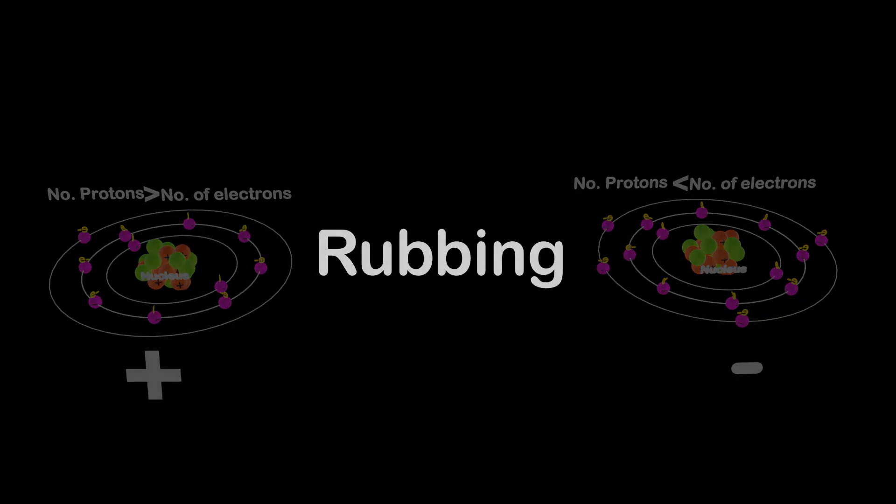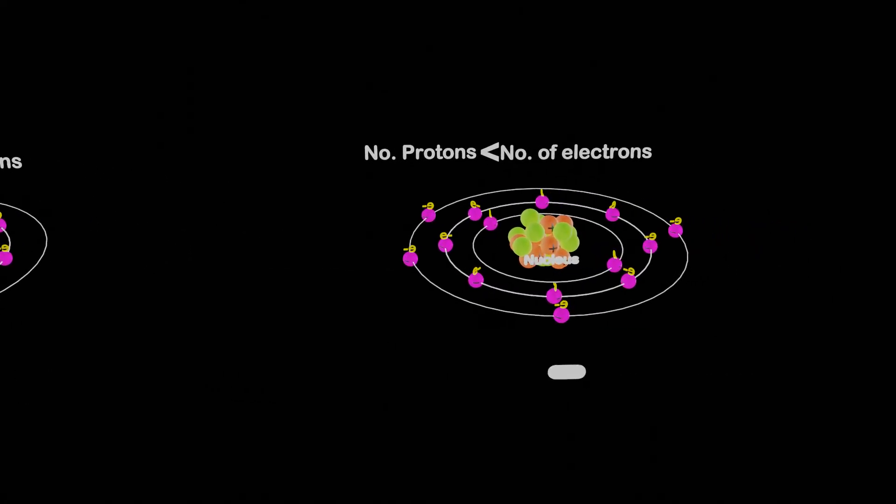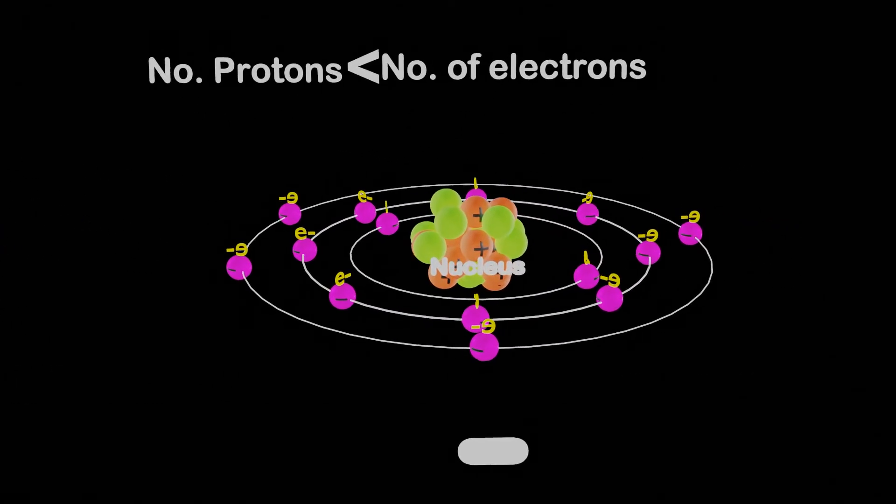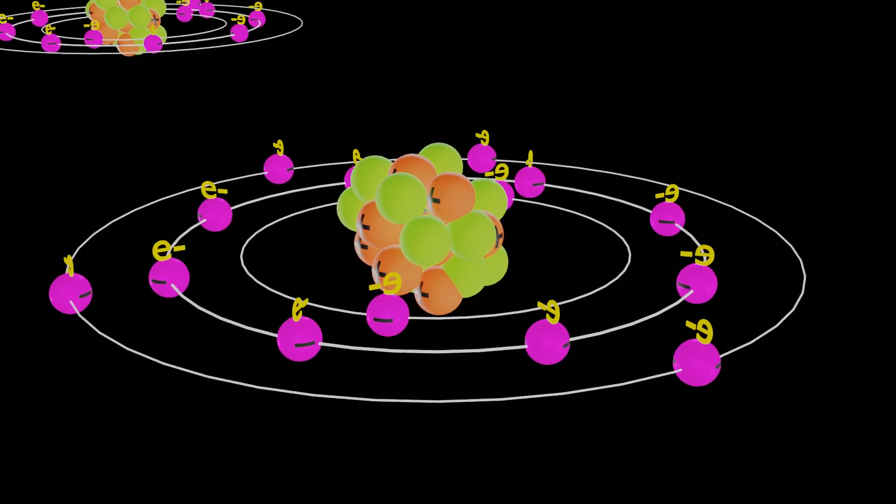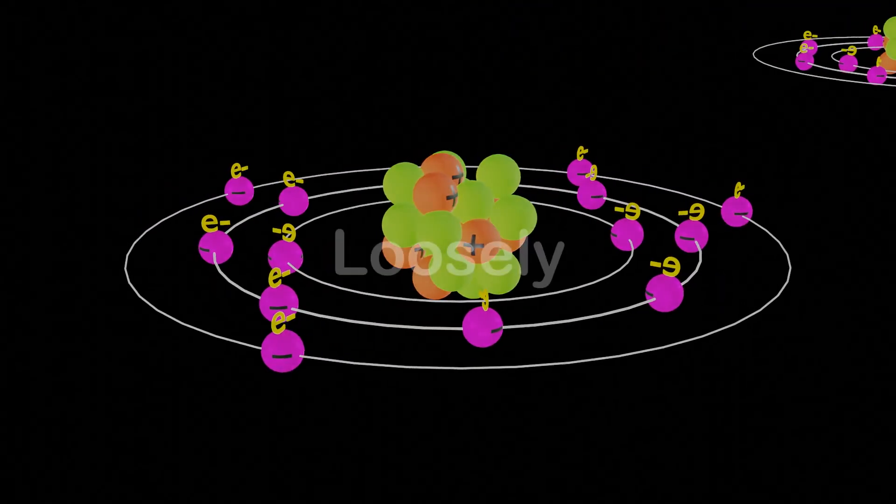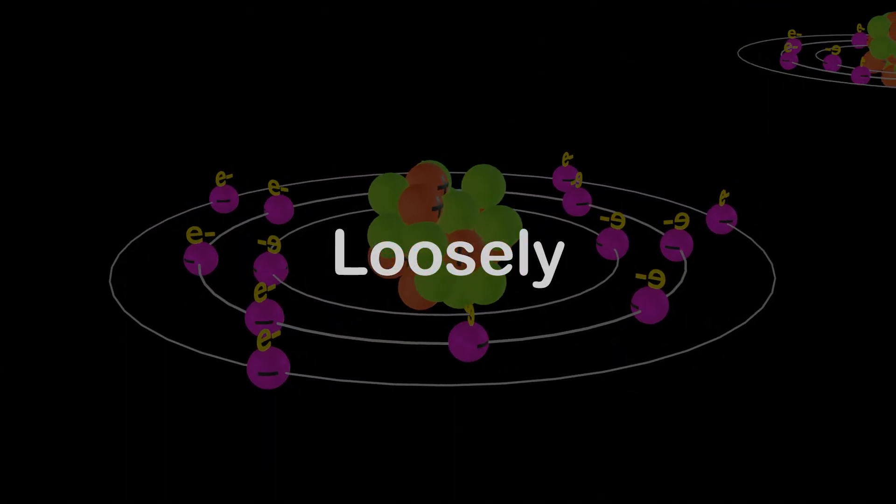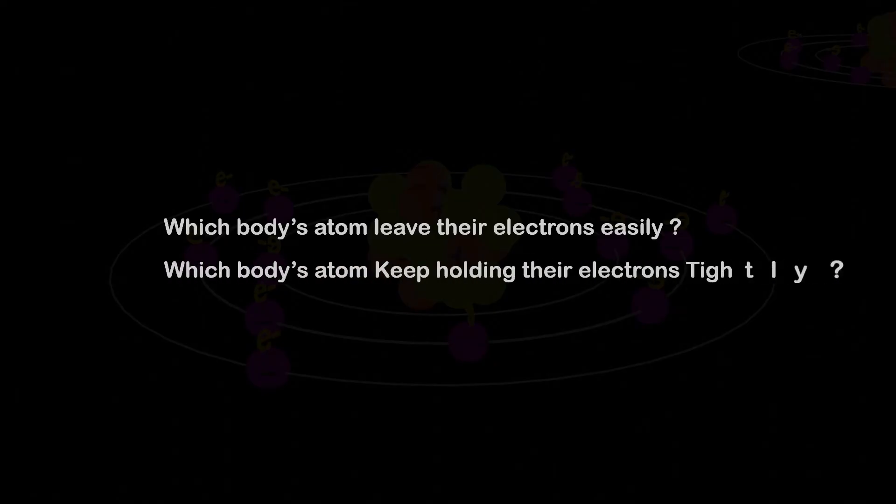And the body becomes positively or negatively charged. It means that any body can be positively or negatively charged, depending on which body's atom is holding its electrons tightly, and which body's atom is loosely holding its electrons. Now the question arises about knowing which body's atoms leave their electrons easily, and which body's atoms keep holding their electrons tightly.